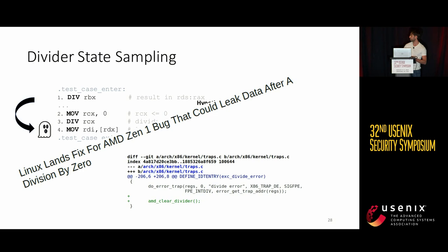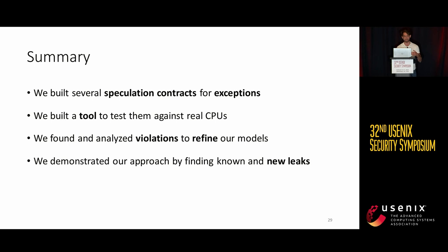The good news is that in the previous days there have been discussions in the Linux community, and a patch has already landed. We'll read about this in the next days and weeks. To summarize: in our work, we built several speculation contracts for exceptions, we built a tool to test these contracts against real hardware and CPUs, we found and analyzed violations, we tried to infer the information leakage and refine our models in an iterative process, and we demonstrated our approach by finding both known and new leaks. The paper is online, and I'm here for questions.